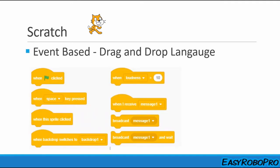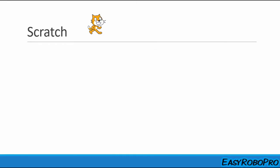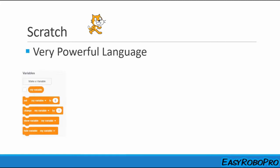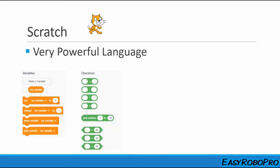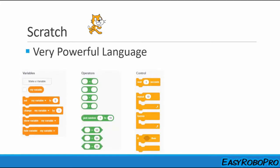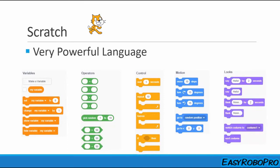In Scratch, events can be anything like a start event, a button click event, a sprite click event, a background change event, and many more. It is simple but very powerful — all the major concepts of programming can be learned, like variables, operators, control statements, motion, looks, and sound.